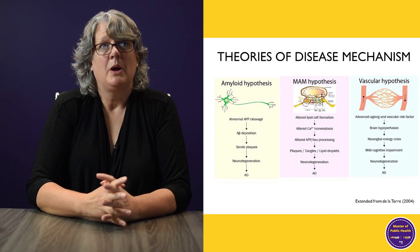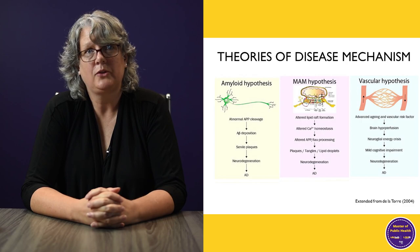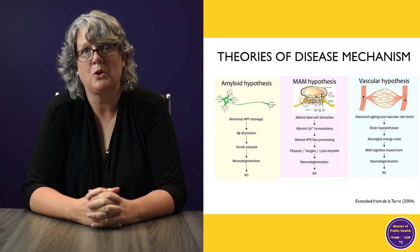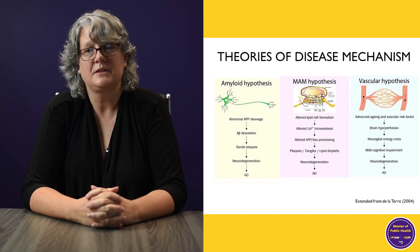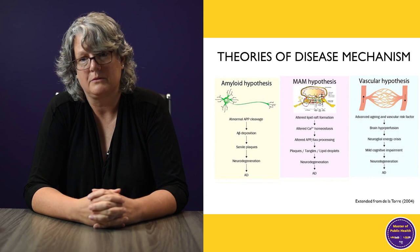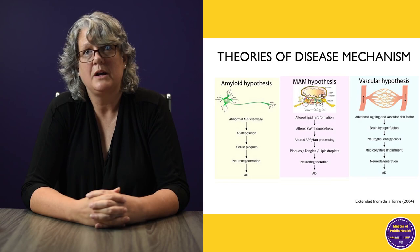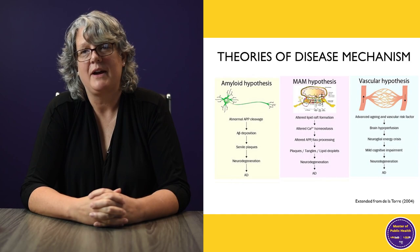We have three basic theories to discuss. The first is the amyloid hypothesis. You may know about plaques and tangles — these are made up of misfolded proteins, and one of those misfolded proteins is beta amyloid. The second hypothesis is related to mitochondrial function. Mitochondria are the powerhouses of our cells, and they start to lose their efficiency, fail, and are part of a cycle of nerve cell death. The third is the vascular hypothesis.